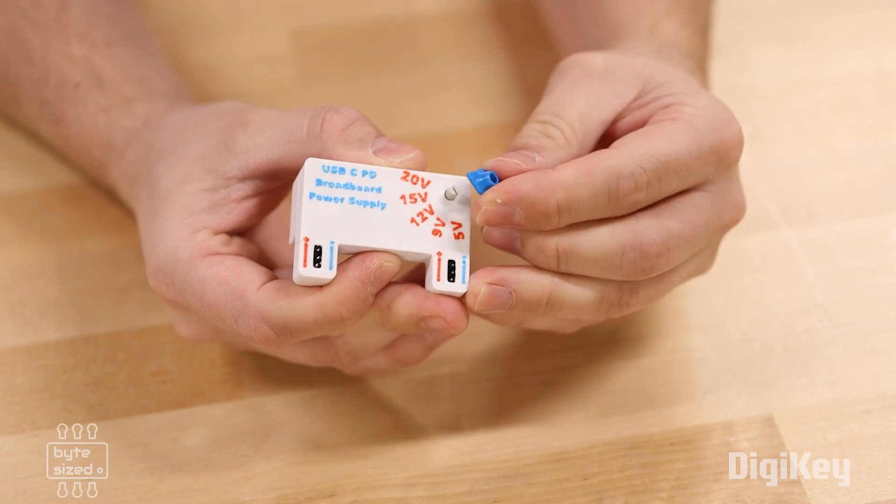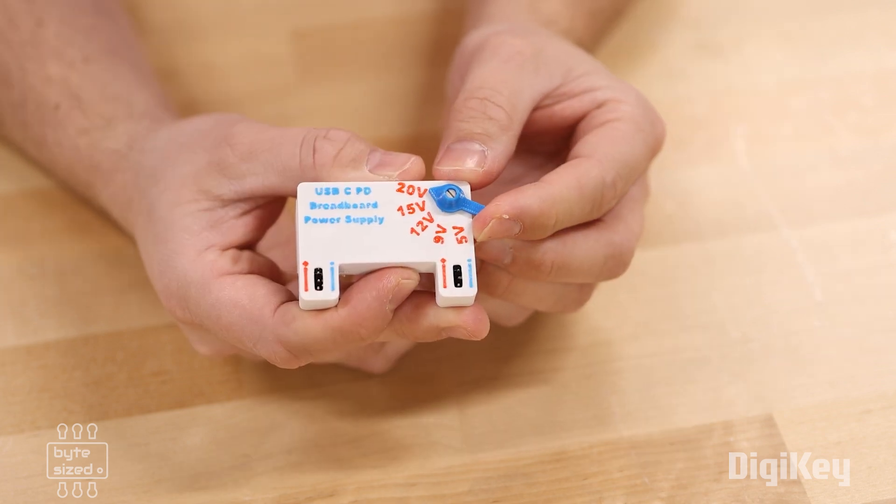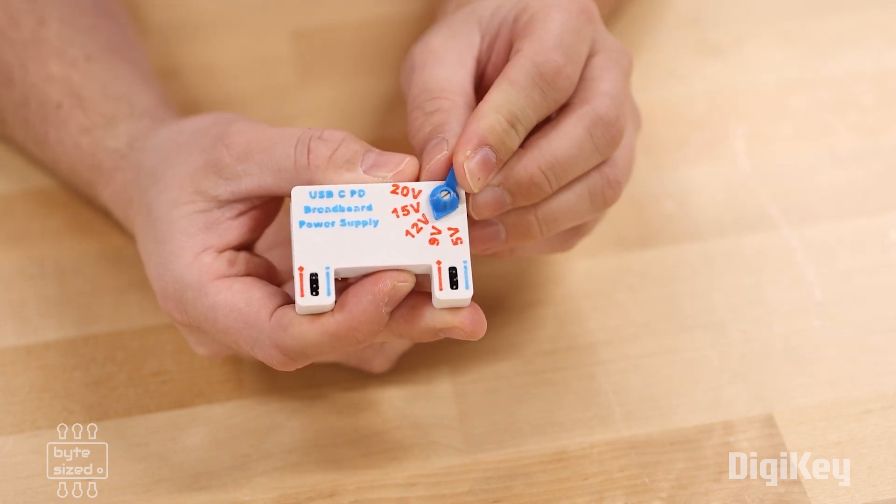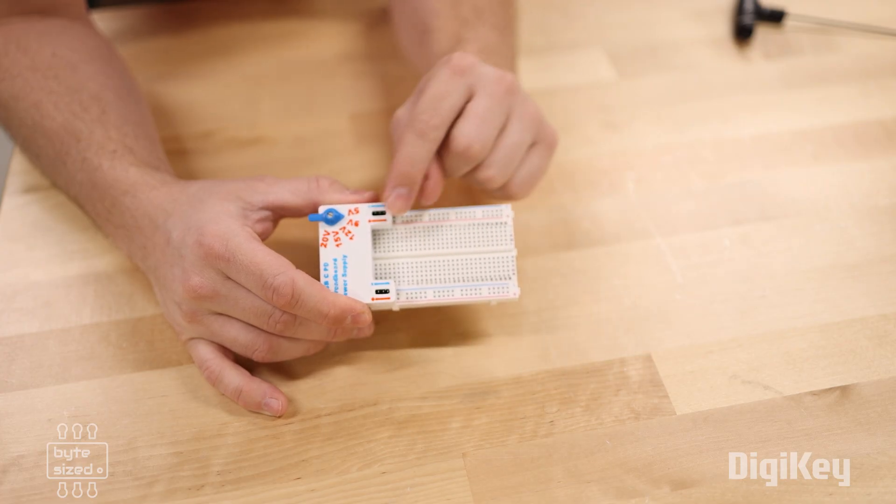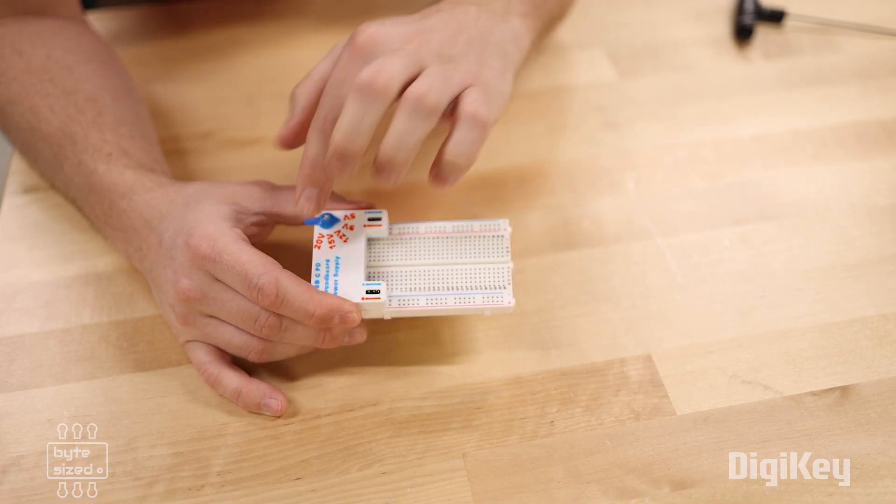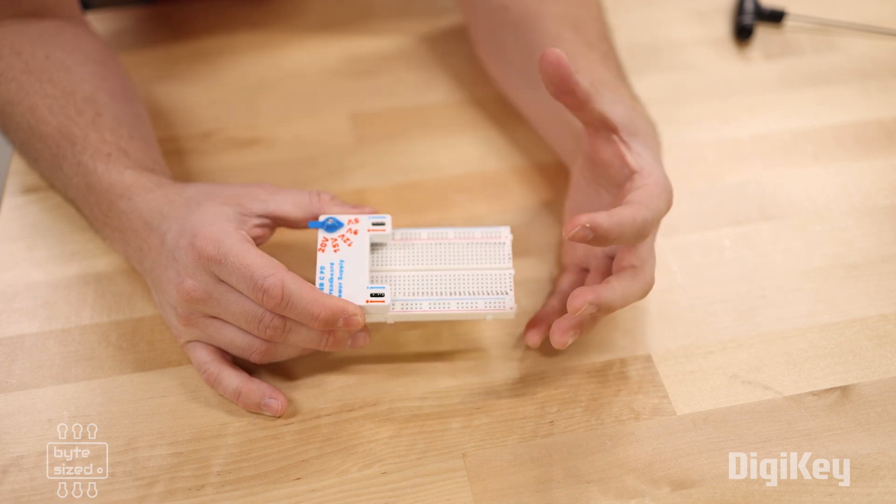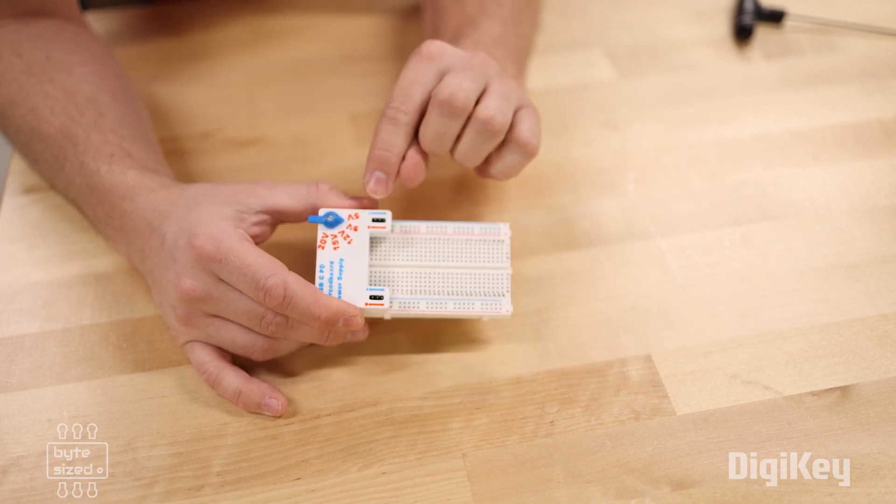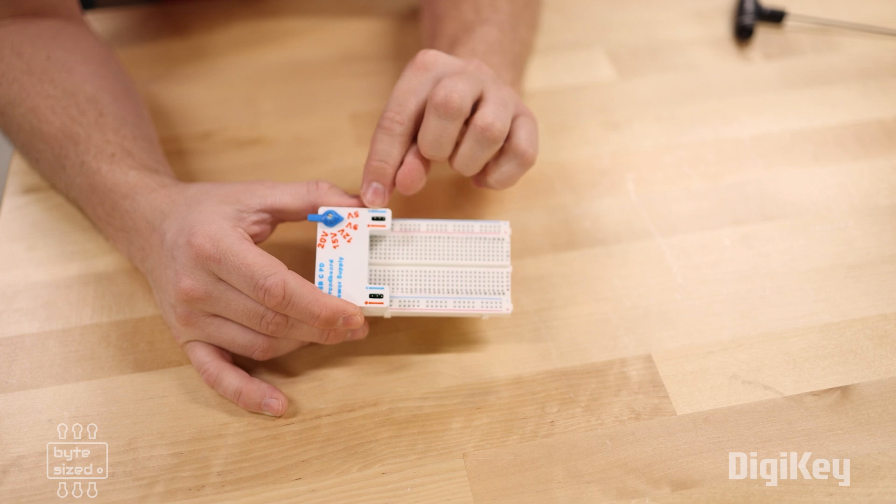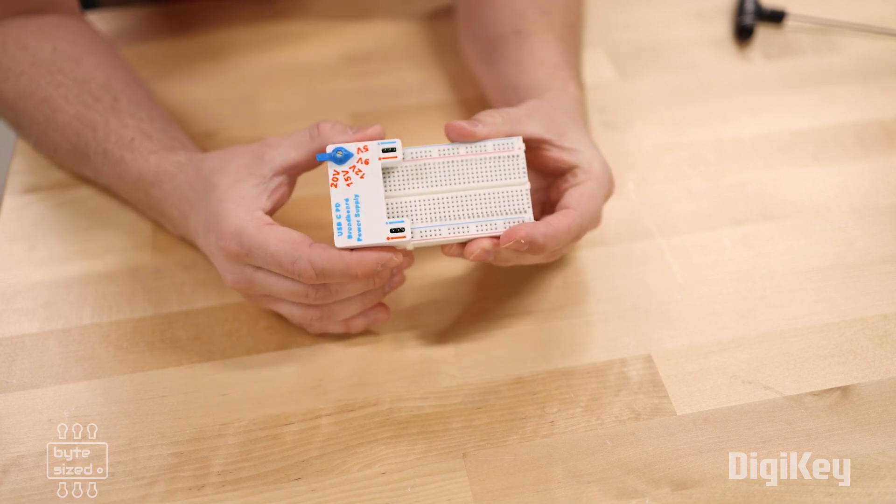The last piece is the voltage dial. Using the dial, I can select what voltage I want on the output rails. If you're familiar with breadboards, you'll know that they aren't symmetrical. So this can only go on one side of the breadboard and not the other. And to make that easier to identify, I've printed the plus and minus voltage rails onto the enclosure itself.